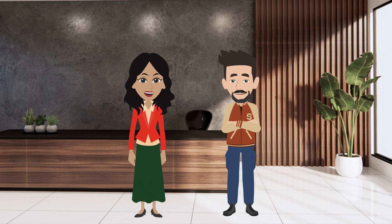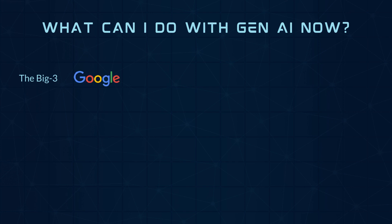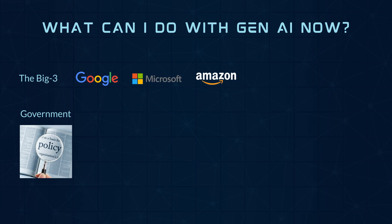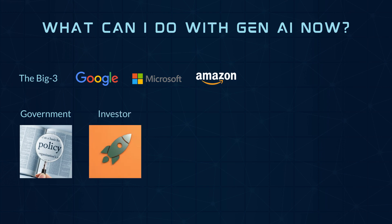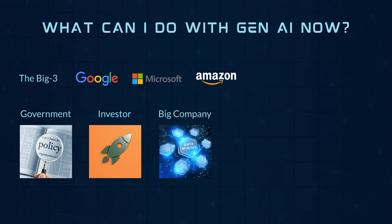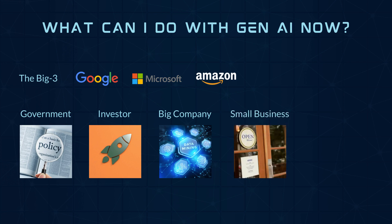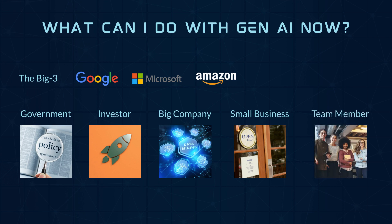Now you might be asking yourself, what can I do with Gen AI now? If you are one of the big three — Google, Microsoft, or Amazon — you can continue investing heavily in AI. If you are the government, you can focus on policy writing and guidelines. If you are an investor with a deep pocket, you can pay a team to create the next big AI thing. If you are a big company, you can invest in R&D, custom app building, integration, data mining, etc. If you are a small business, you can test and use off-the-shelf free tools and subscribe if really needed. If you are a team member, try to make the most out of off-the-shelf tools, starting with the free ones built into tools already in use.